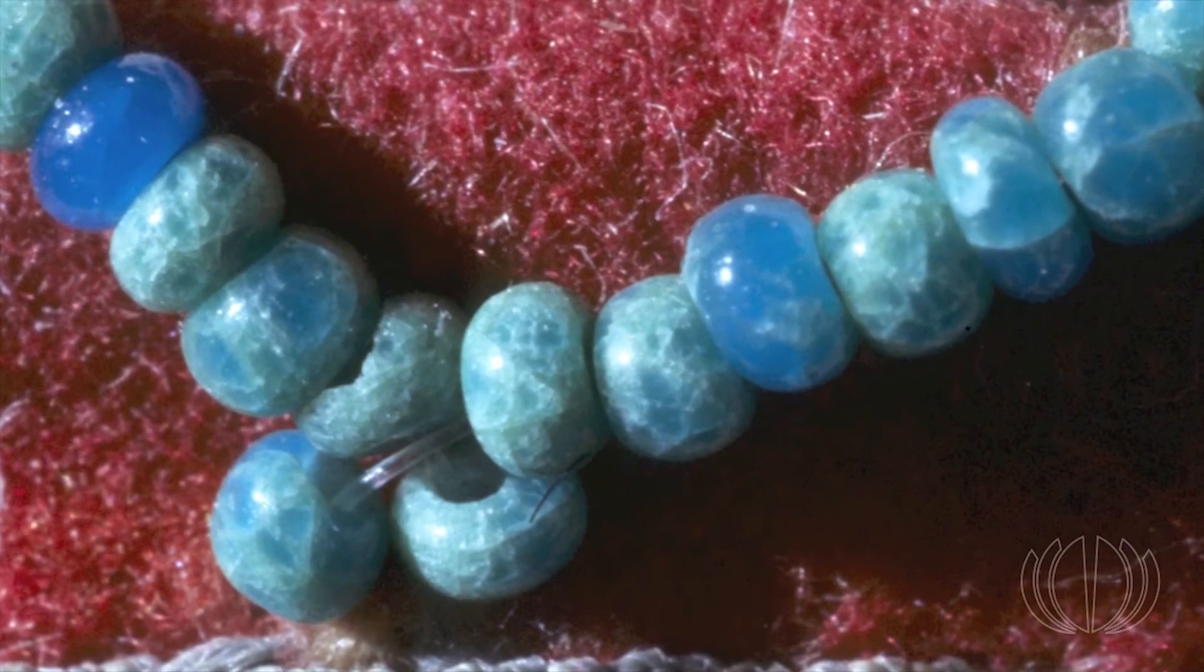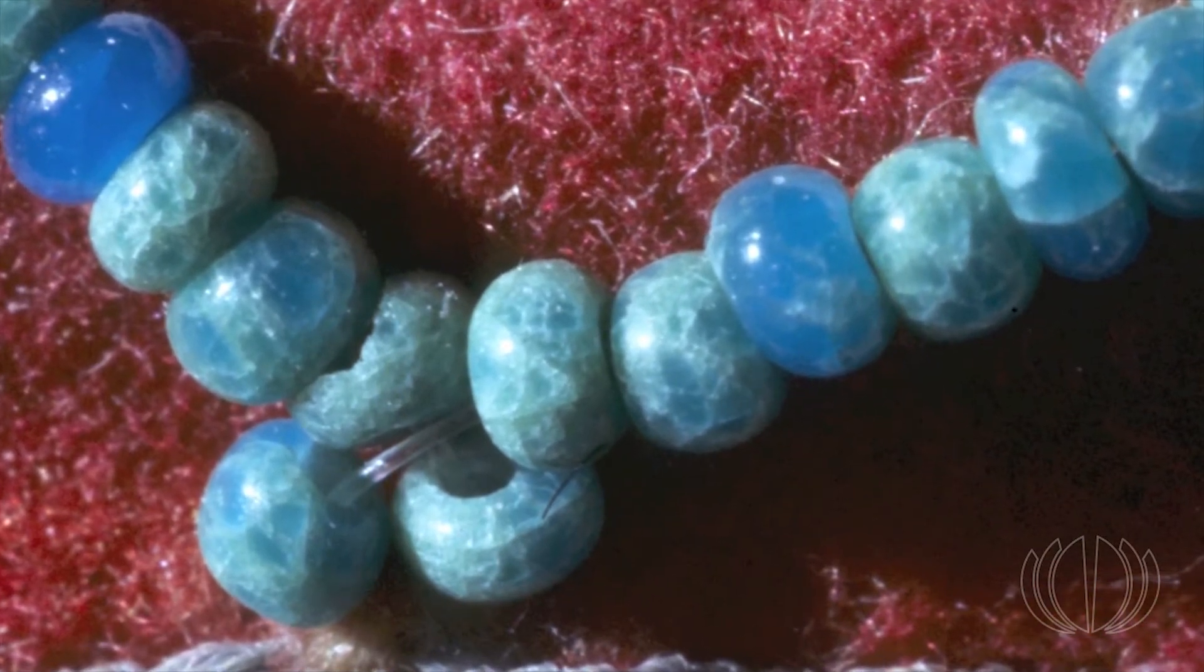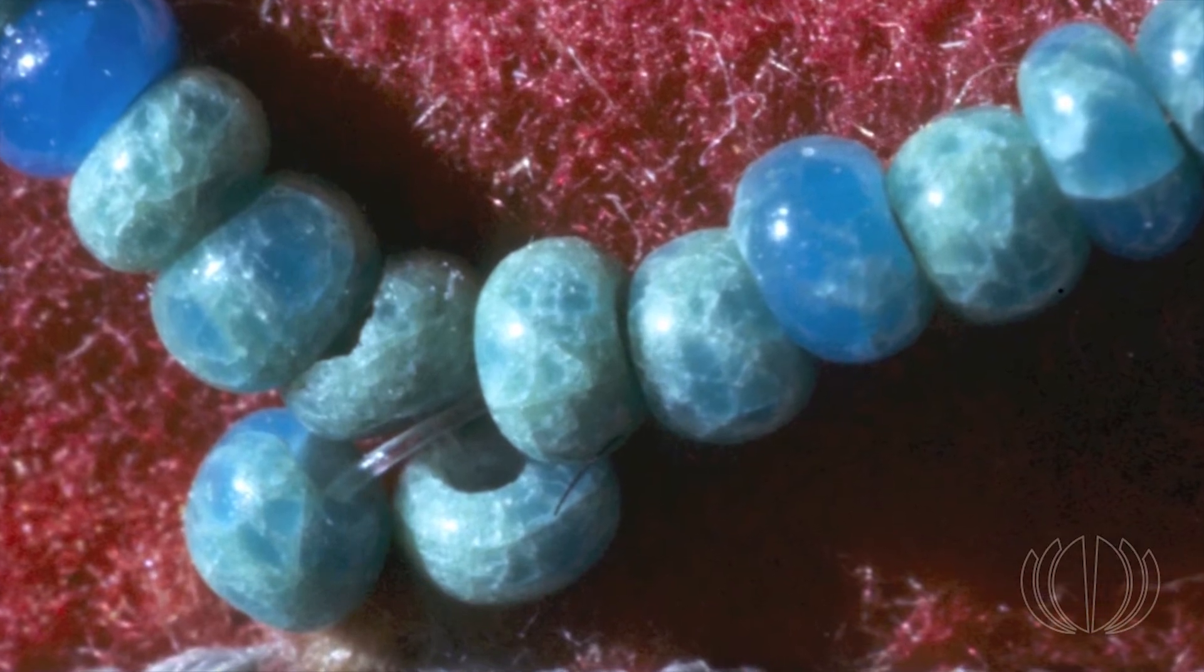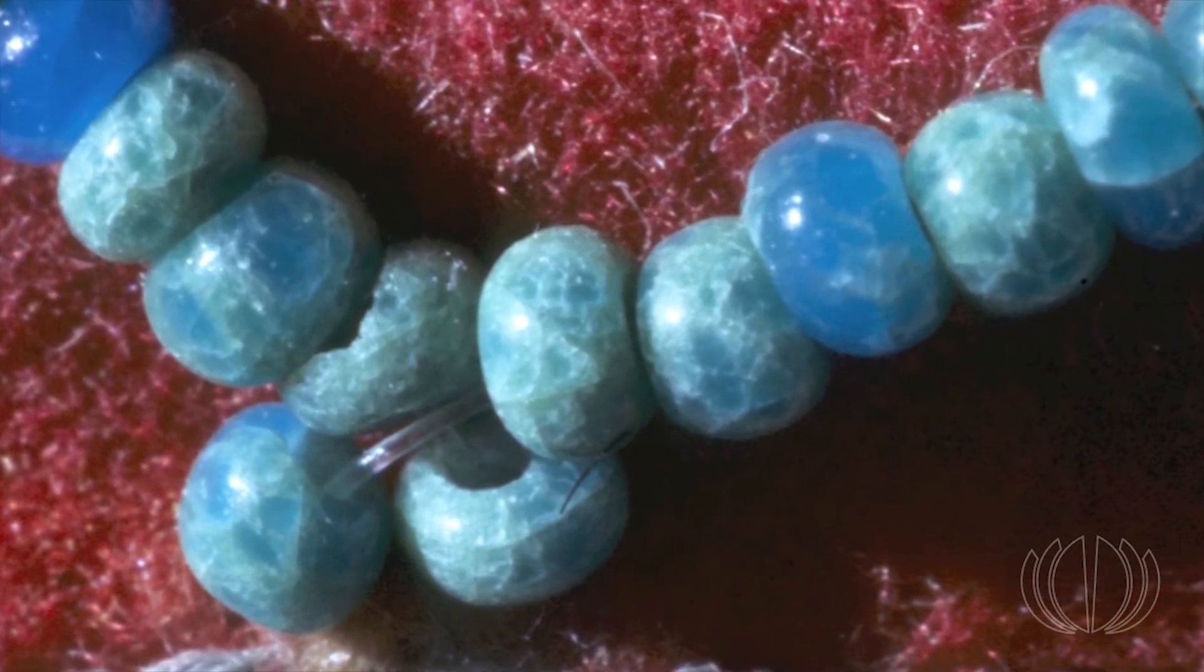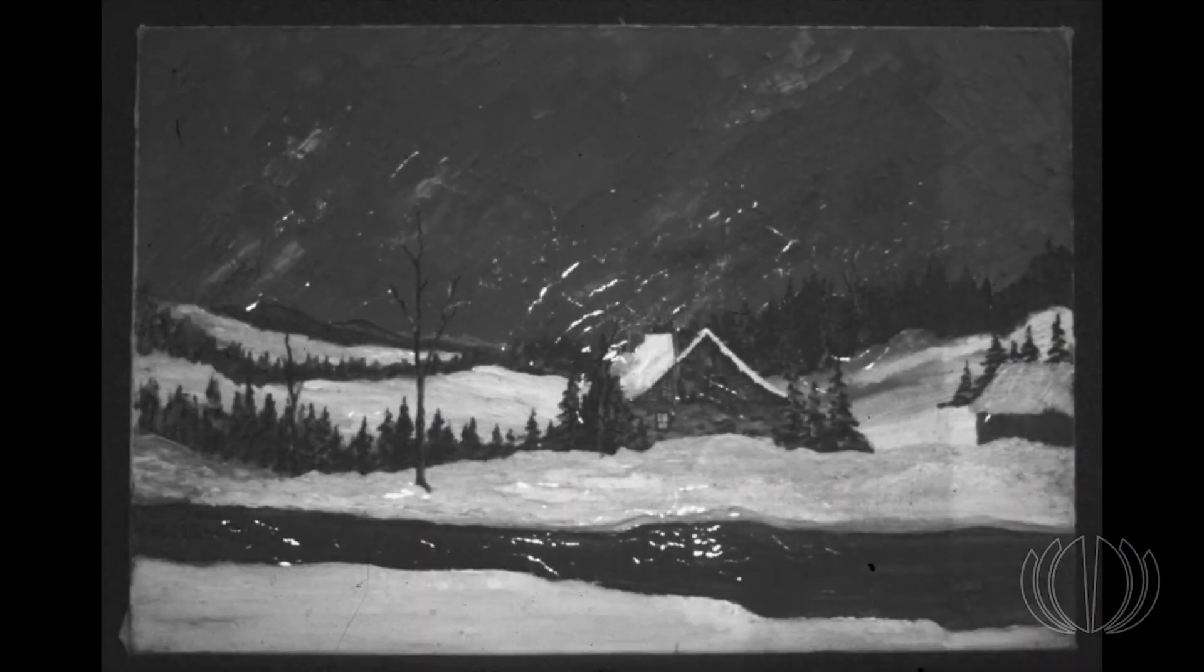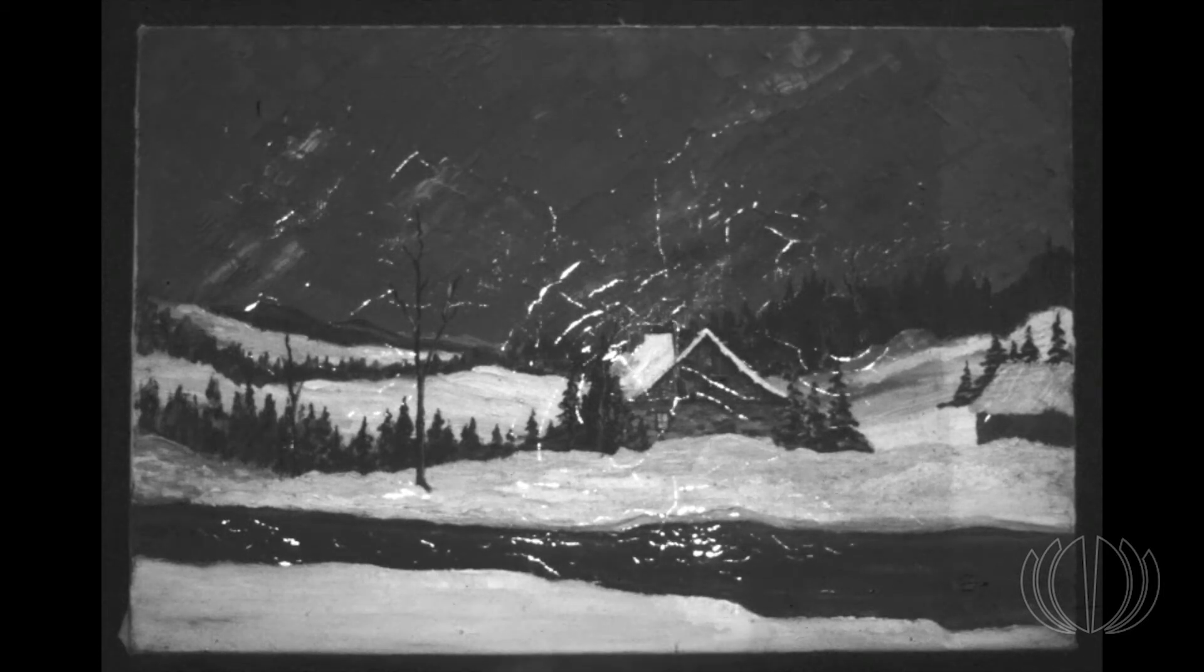RH that is above or below a very specific level can cause damage to some objects. As an example, these glass beads sweat when RH rises above 55% and crizzle when RH drops below 40%. RH fluctuations can cause warping and cracking in vulnerable objects, such as paintings.